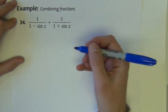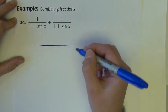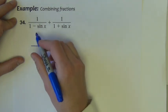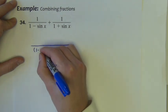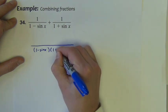Also, if I want to combine these two fractions into one fraction, the common denominator is the product of my two denominators. So 1 minus sine x times 1 plus sine x.